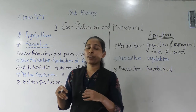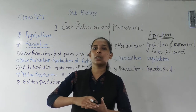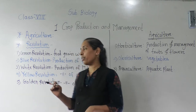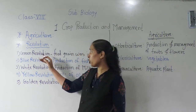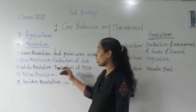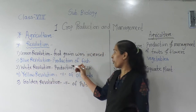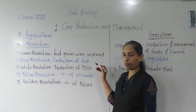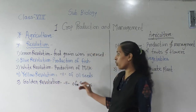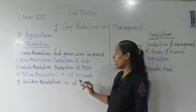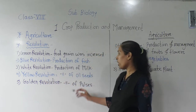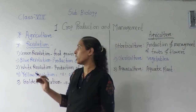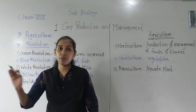Let me repeat all the revolutions once again. Green Revolution means increased production of food grains. Blue Revolution means production of fish. White Revolution means production of milk. Yellow Revolution means production of oil seeds. And Golden Revolution means production of pulses. These are the revolutions that happened in the agriculture field.